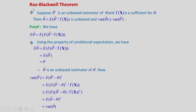Now we will establish the Rao-Blackwell theorem. Suppose theta_hat' is an unbiased estimator of theta and T(X) is a sufficient statistic for theta. Then a new estimator theta_hat = E(theta_hat' | T(X)) — the conditional expectation of theta_hat' given T(X) — is unbiased and its variance satisfies Var(theta_hat) ≤ Var(theta_hat').